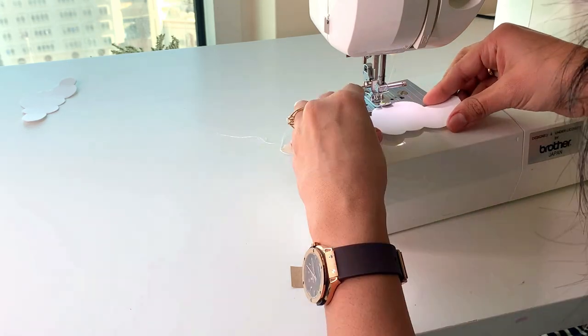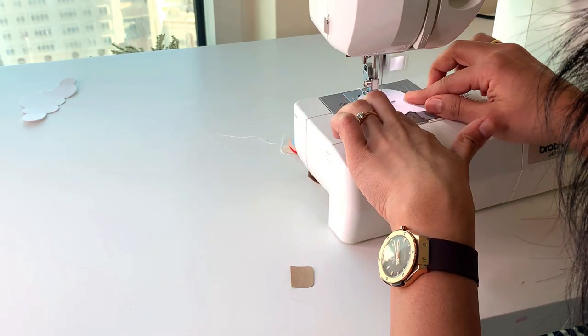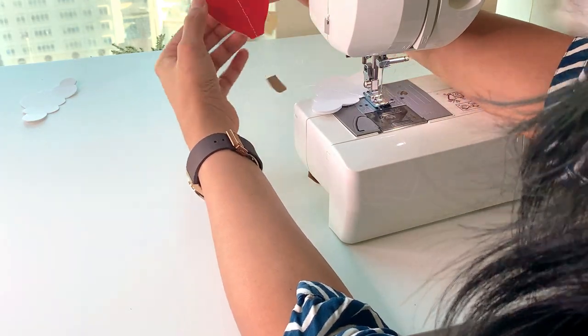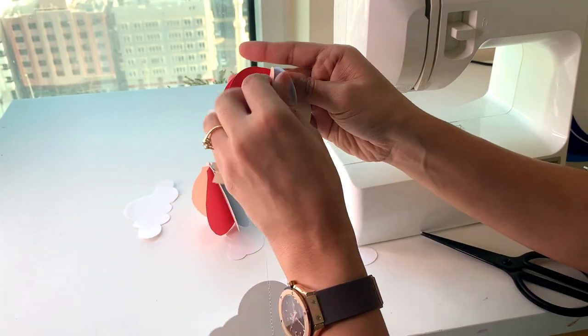Then stitch two clouds together through the center. Repeat the same for two more sets of hot air balloons and clouds. Then you can separate the papers and clouds to get a 3D effect.